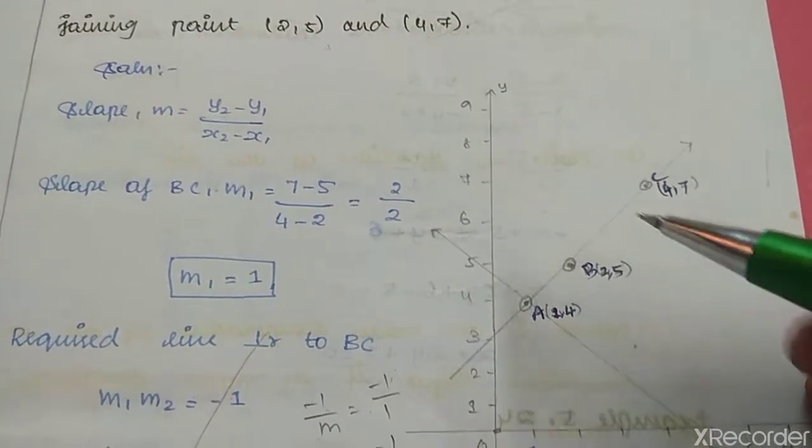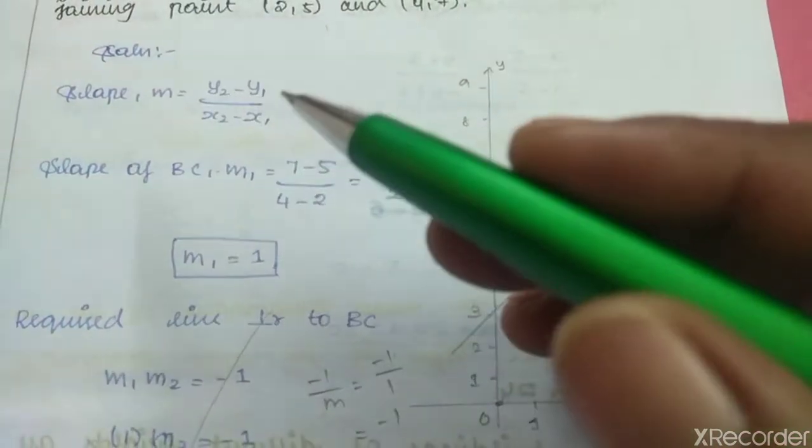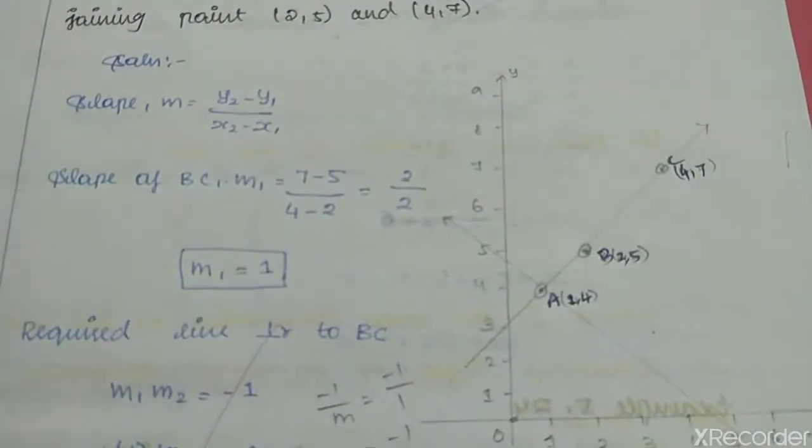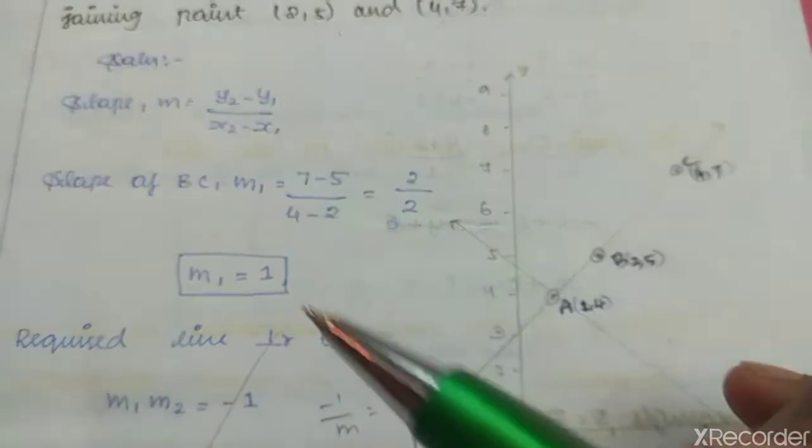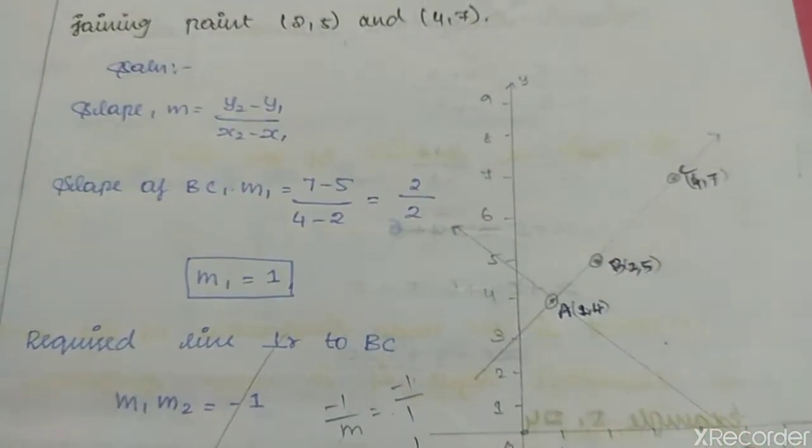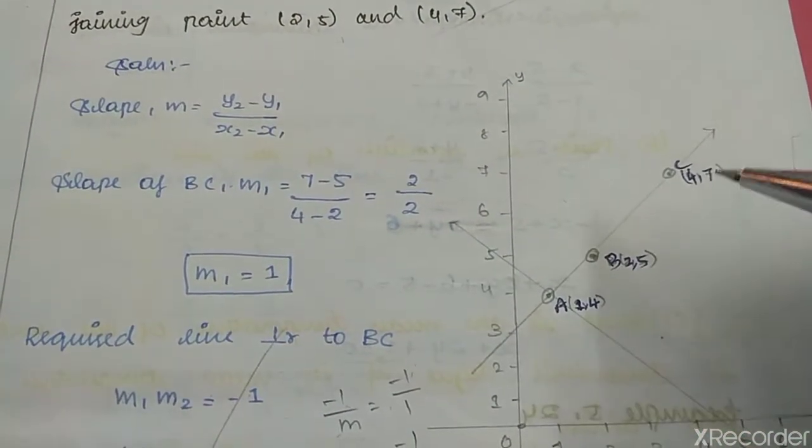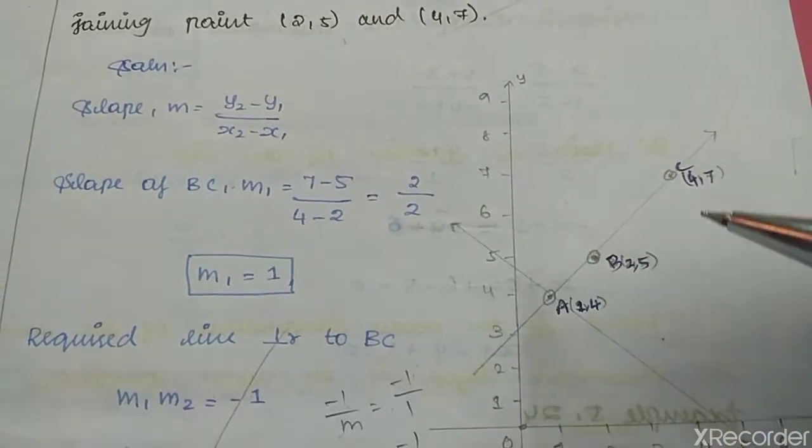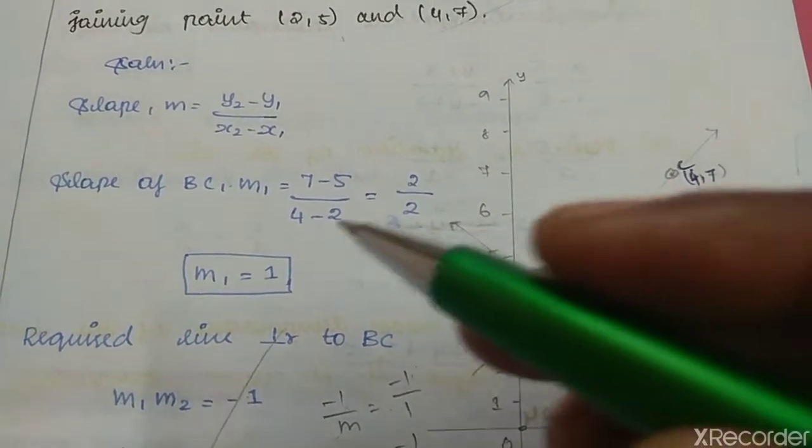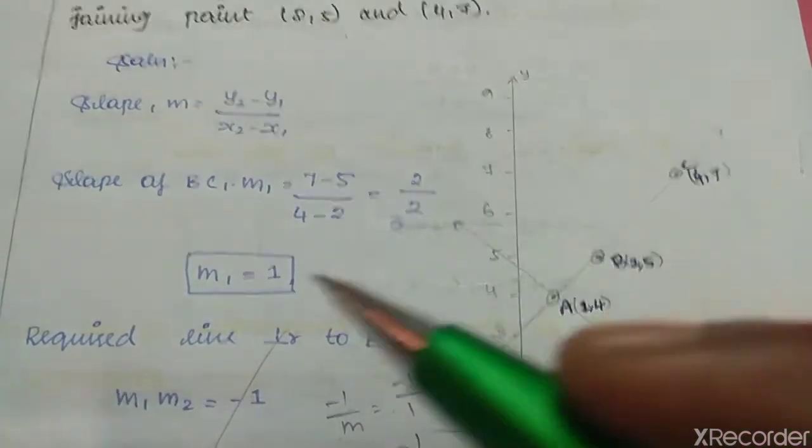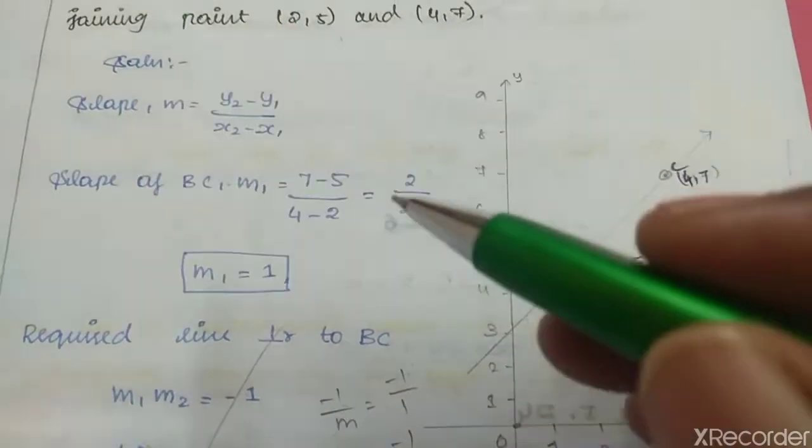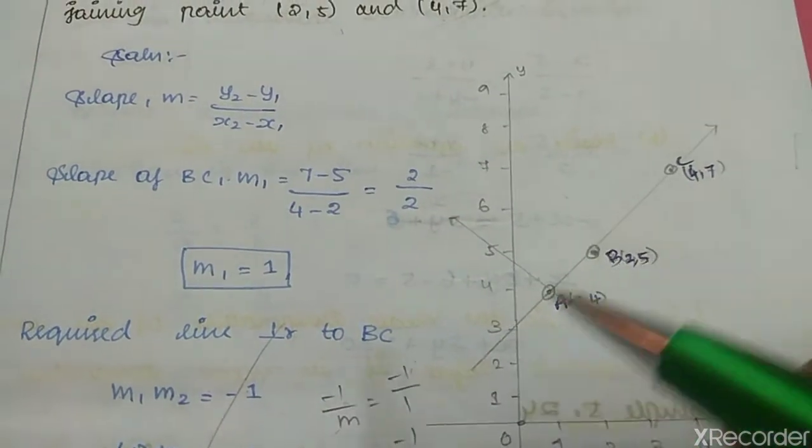Using the slope formula m = (y2 - y1)/(x2 - x1), the slope of BC is m1 = (7 - 5)/(4 - 2) = 2/2 = 1. So m1 = 1.